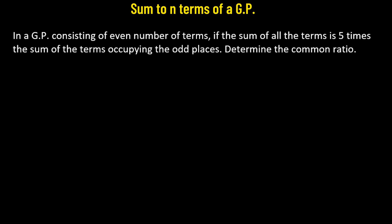We have a geometric progression which consists of an even number of terms. The sum of all the terms is 5 times the sum of the terms occupying the odd places. We need to determine the common ratio.